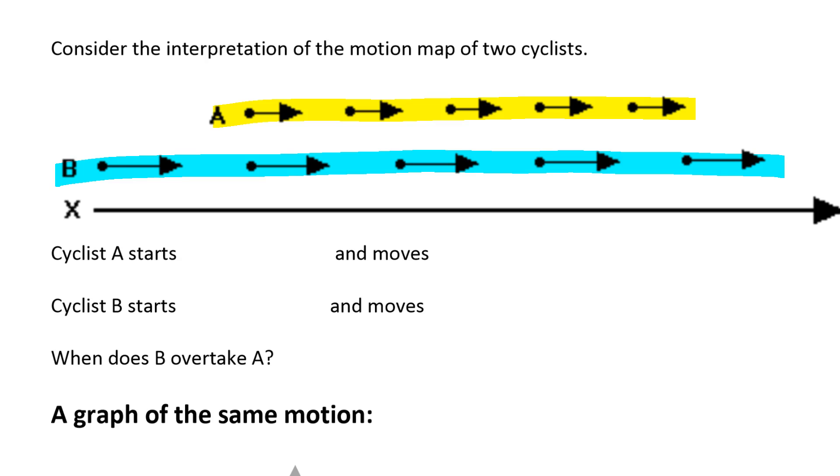Cyclist A starts to the right of the origin and moves at a slow constant velocity.